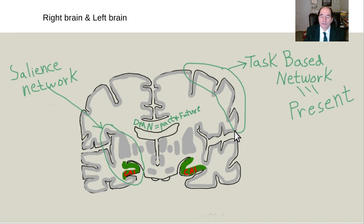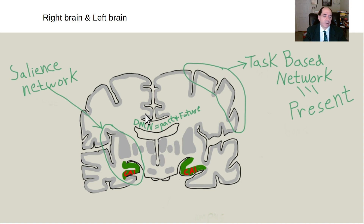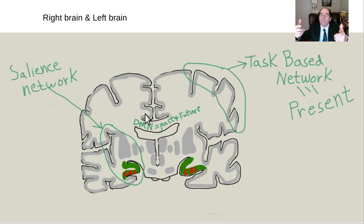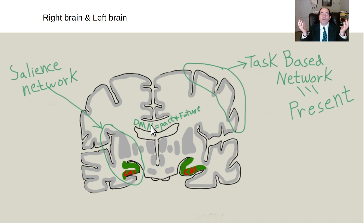Now the concept of networks in the brain. The default mode network — centered around the cingulate gyrus — is active when you close your eyes at rest. You typically think about relationships: what happened yesterday, what you'll do tonight. So the default mode network maps time — past and future — and focuses on social relationships, which are important for human survival. If you put a patient on a functional MRI table and ask what they're thinking about, they'll usually describe an interpersonal situation.